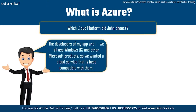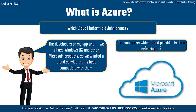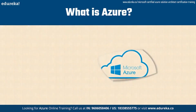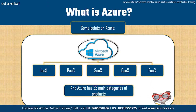Which cloud platform did John choose? John says: the developers of my app and I all use Windows OS and other Microsoft products, so we wanted a cloud service most compatible with them — and that is Microsoft Azure. Just like every other cloud platform, Azure provides five distinct types of services: Infrastructure as a Service, Platform as a Service, Software as a Service, Container as a Service, and Functions as a Service.